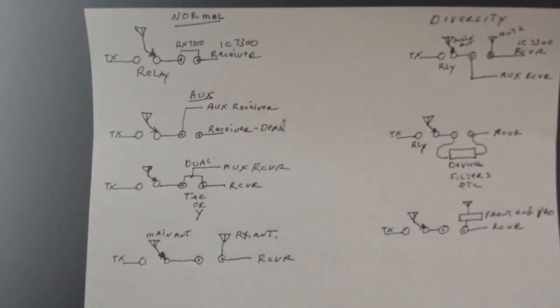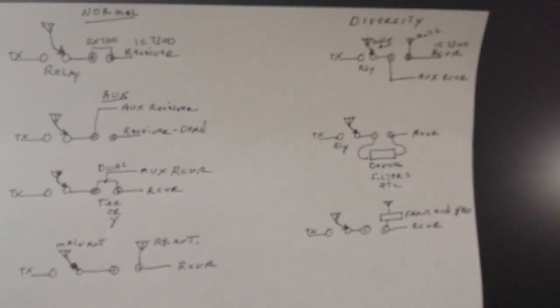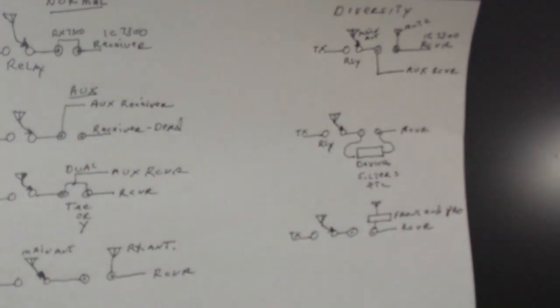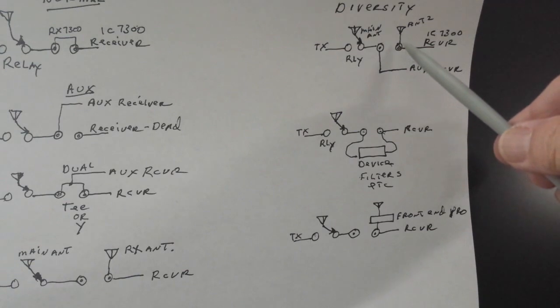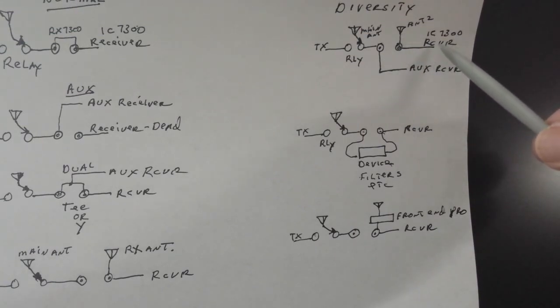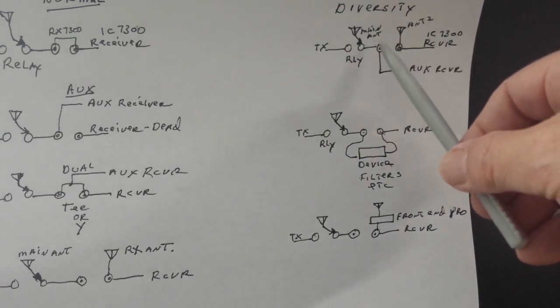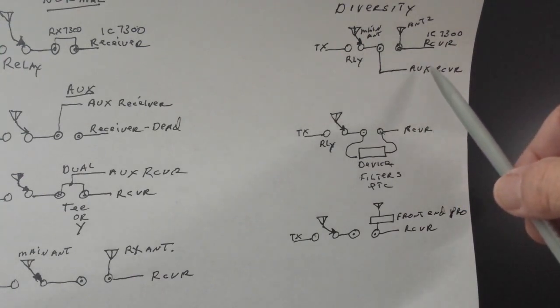Then up here, let's see if we can focus in on that a little better. Here we have a diversity system set up where we use two antennas: antenna one, the main antenna, and antenna two. And we remove the jumper again between our two RCA jacks on the back, and we hook our antenna two to this jack. And that feeds directly into the IC-7300's receiver. And then we have this one connected to the auxiliary receiver.